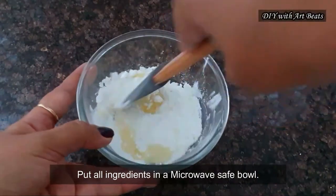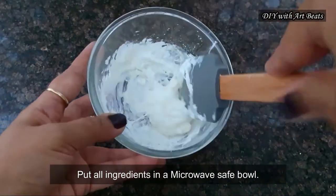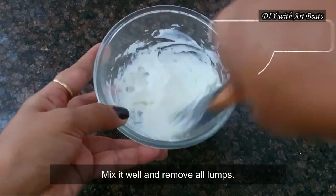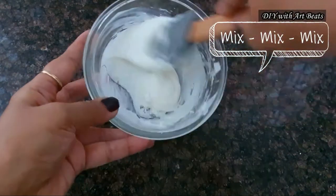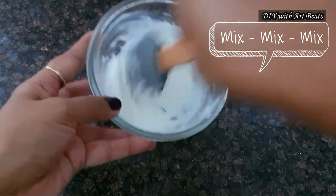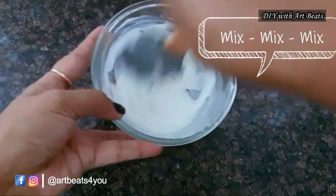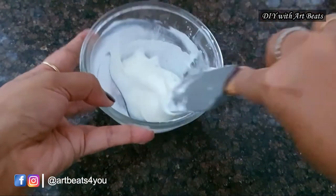First we will mix all the ingredients in the bowl. For tutorial purpose I am making this in a small quantity. That's why I have taken all the ingredients in less quantities. Mix it till there are no lumps here.